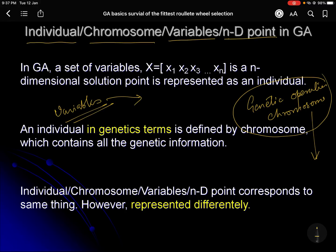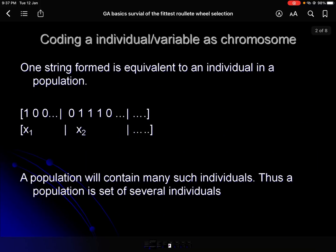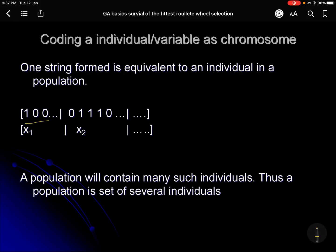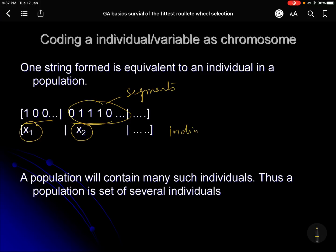So these different representations facilitate the operations we want to perform. If you have a chromosome, you can keep segments side by side. In variable form, x1, x2 are put side by side — that is the individual form. These two forms are interchangeable; we can go from chromosome to individual or individual to chromosome as needed.